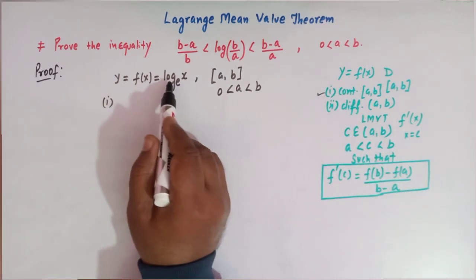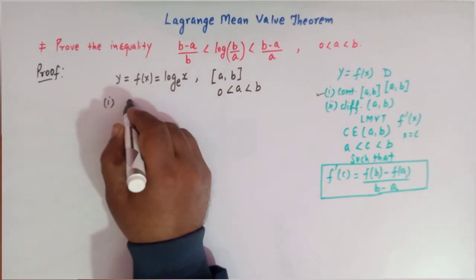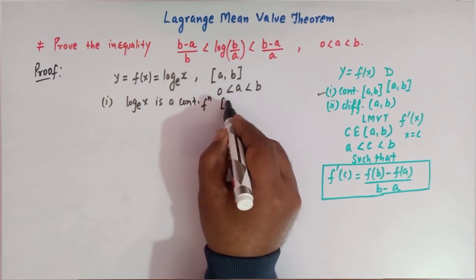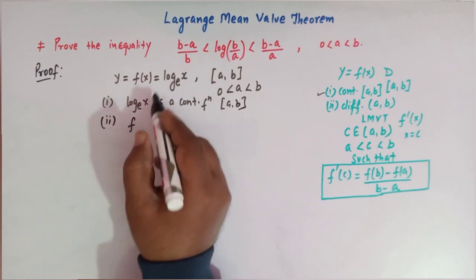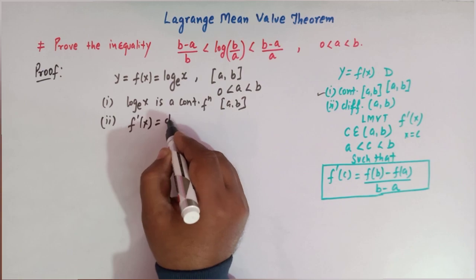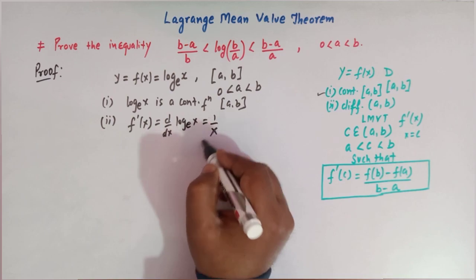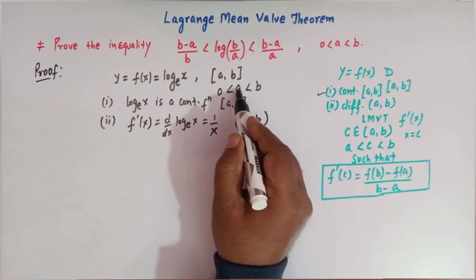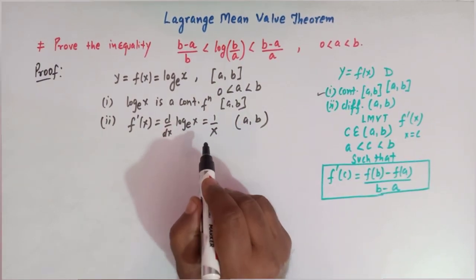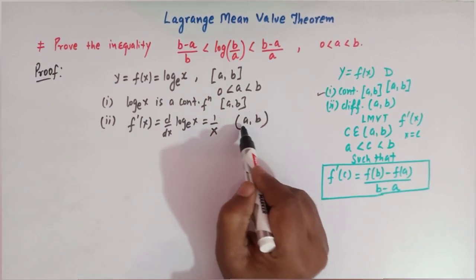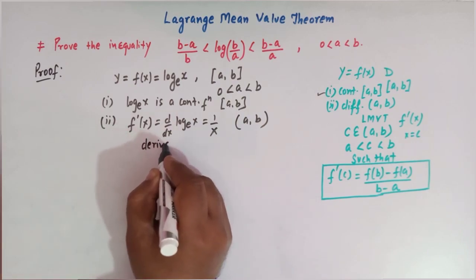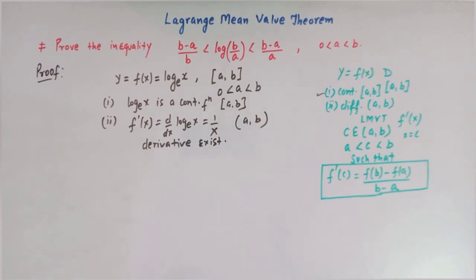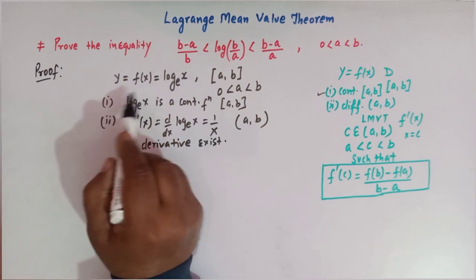Let us verify that this function satisfies the conditions of Lagrange's mean value theorem. We know that the log function is continuous, so log(x) is a continuous function on the interval [a, b]. Now if we find the derivative, f prime of x equals d/dx of log(x), which is 1 over x. The derivative exists on the interval (a, b) because a is greater than zero, so we cannot have x equal to zero. Thus f(x) is differentiable on the open interval (a, b).